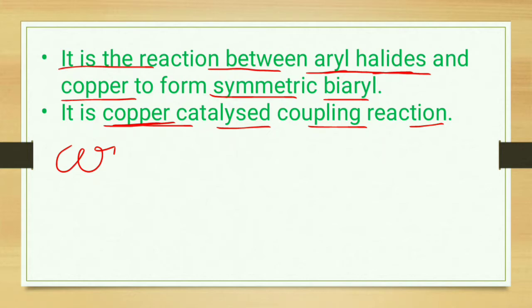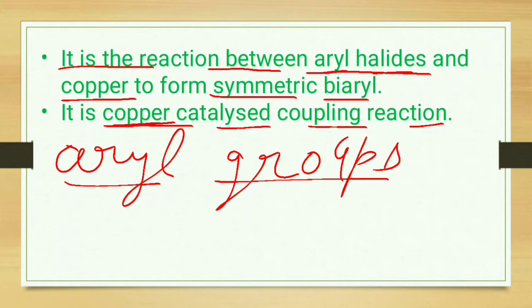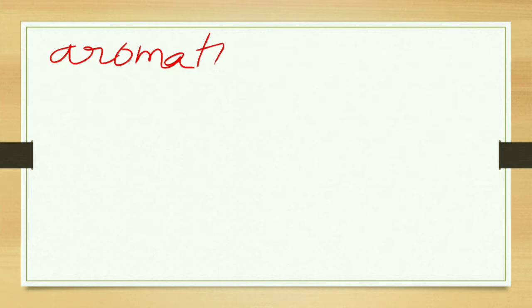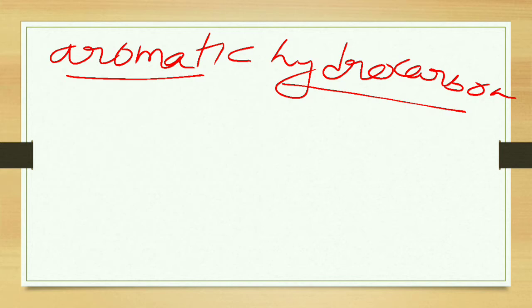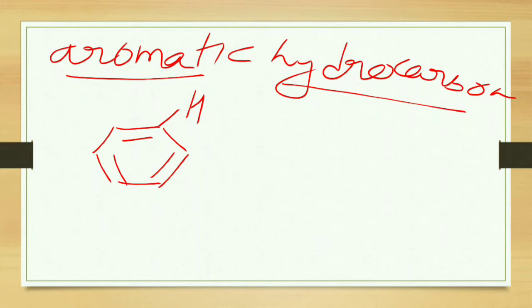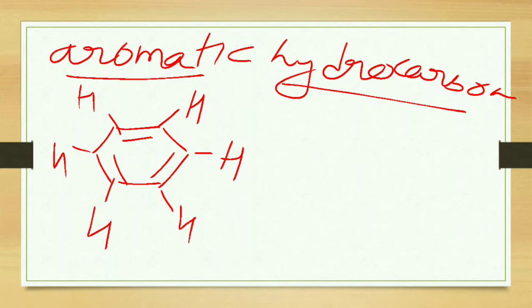To understand this reaction, it is necessary to know about aryl groups. An aryl group is any organic group derived from an aromatic hydrocarbon by the removal of a hydrogen atom. For example, taking benzene — it is our benzene, with all carbons having one hydrogen atom. If I remove this hydrogen atom from benzene, the remaining group will be our aryl group.